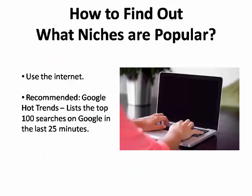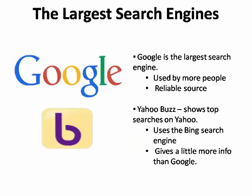So how do you find out which niches are popular? Like anything else these days, you simply use the internet. There are plenty of places you can go to measure the popularity of a particular niche. The first place I always recommend is Google Hot Trends, which lists the top 100 searches on Google during the previous 25 minutes. Google is the largest search engine and is used by more people than any other, so it's a reliable source to tell you what is hot at the present moment.